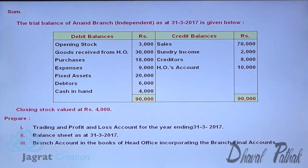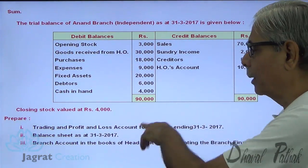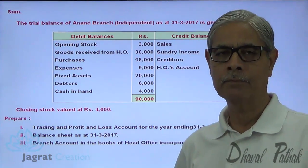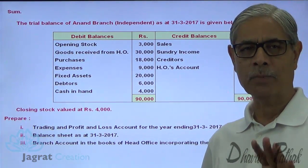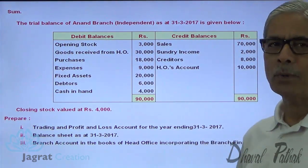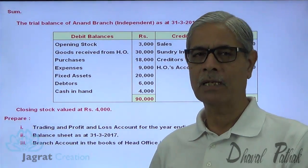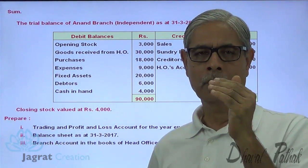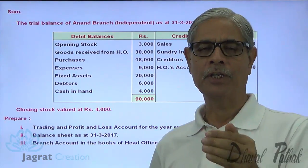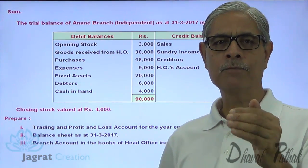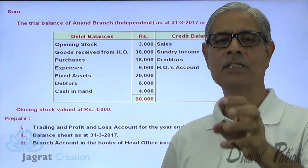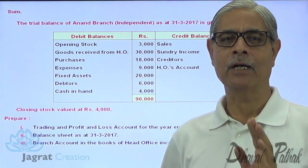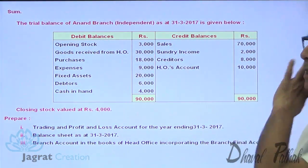I am required to prepare trading and profit and loss account — that's very simple because it's a very small trial balance with just one adjustment. The most important point to be noticed in this trial balance is that the HO account is like a capital account, because the head office gives funds or goods to the branch and the branch operates from the funds provided by HO. So, HO account is like capital account in a normal trial balance.